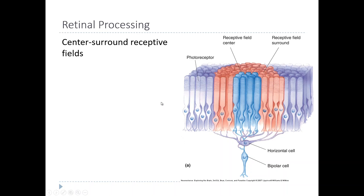For one thing, there are the center-surround receptive fields in the retina. What is a receptive field? It's pretty straightforward — it just refers to the surface of the sensory structure that a given cell responds to. The receptive field for a photoreceptor is pretty simple; it's just the area of the cell itself.